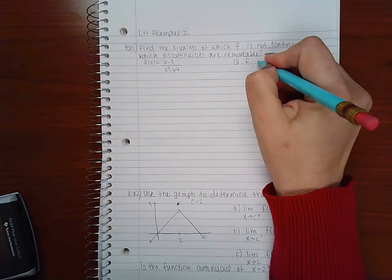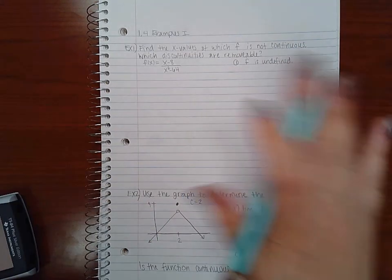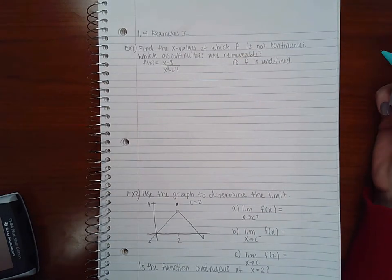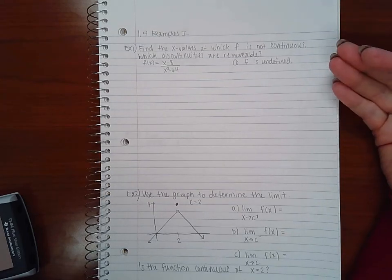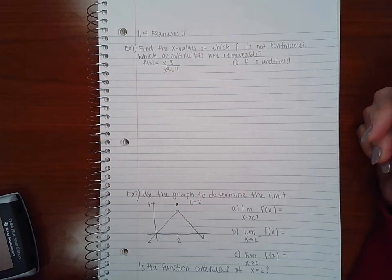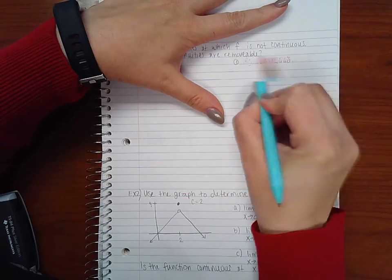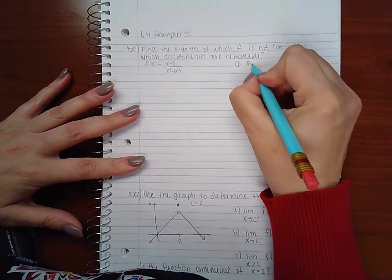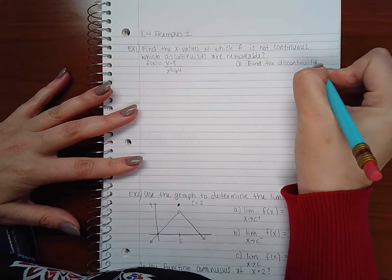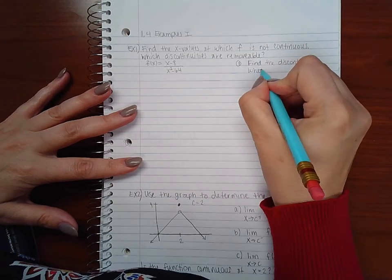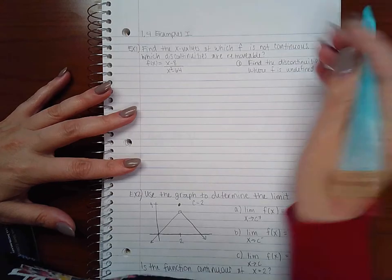We need to find when f is undefined. Well, there's not two things, that's the first thing. We need to find where f is undefined, then we need to distinguish among those discontinuities which ones are removable and which ones aren't. So the first thing to do is to find the discontinuities.